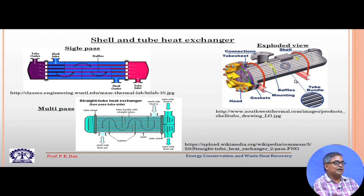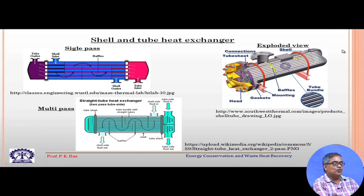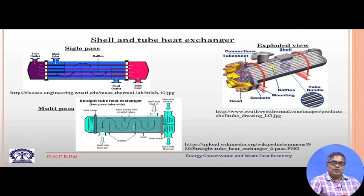A cutaway or exploded view of a shell and tube heat exchanger is shown here. One can see the tubes, the baffles, the tube sheet where the tubes are held, gaskets for leakage prevention, the head through which liquid enters or exits, and the shell and tube separately. There can be many variations in this arrangement for shell and tube heat exchangers.